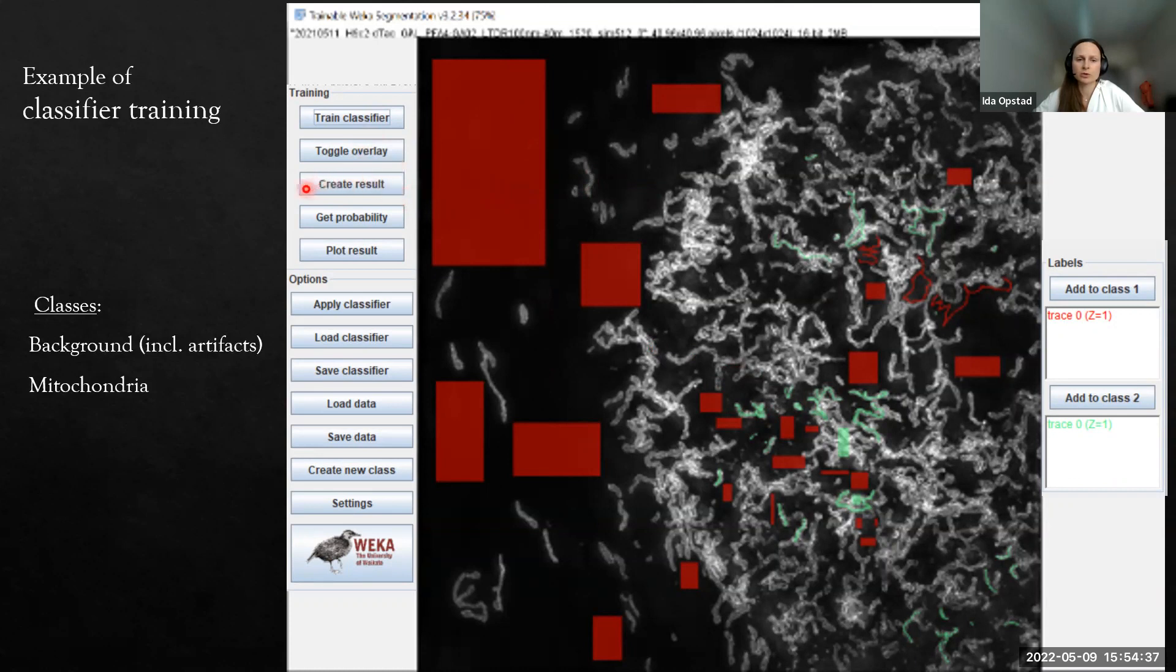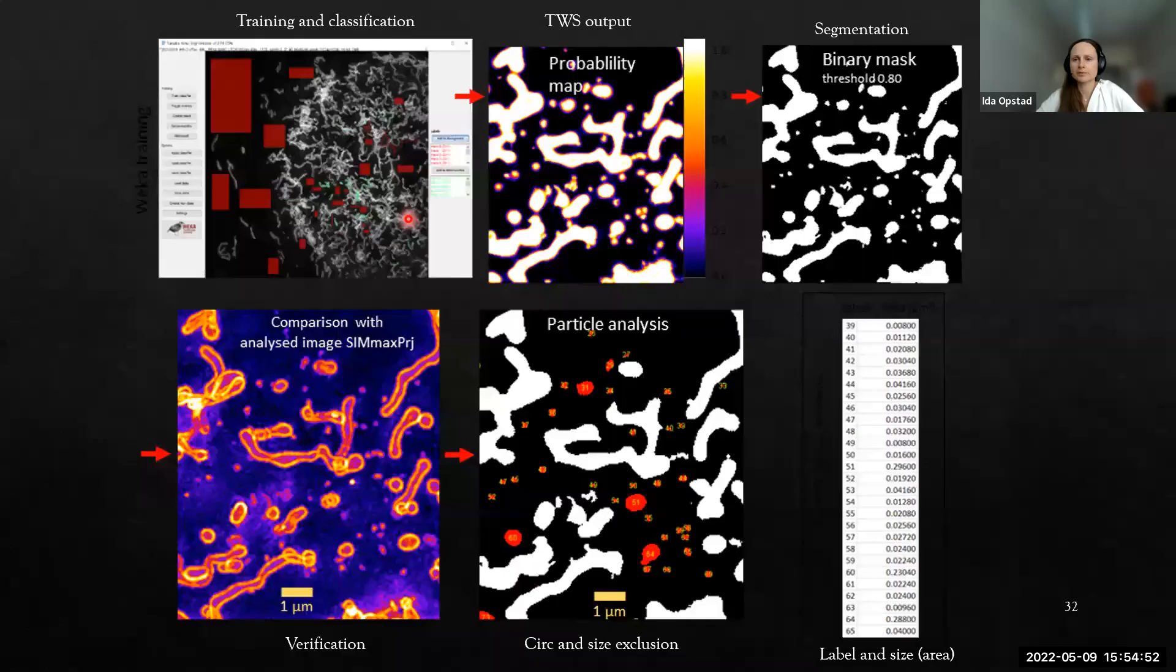If you just use create result, it will take 50-50. But I rather use the probability map because then I could change the threshold accordingly so that it made sense compared to the images. I did the training and then I get a classifier and apply it to the other images and I get a probability map out.